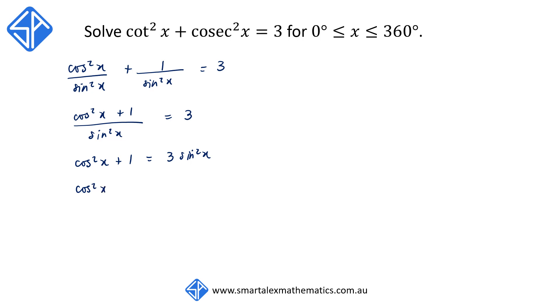So we have cos squared x plus 1 is equal to 3 times 1 minus cos squared x. Expanding this, cos squared x plus 1 is equal to 3 minus 3 cos squared x.